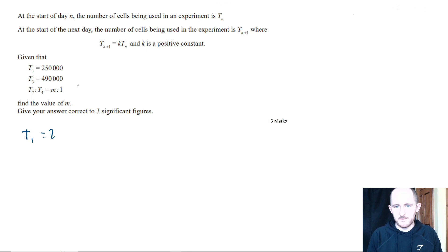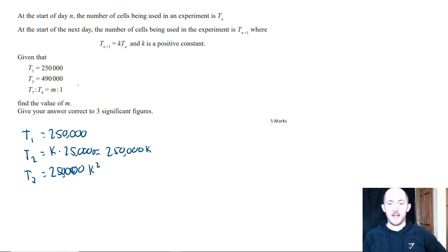We know that t_1 is 250,000, that's all well and good. Then I need to work out an equation for t_3. To do that, I need to actually go through t_2. So t_2 would just be k times 250,000, right? So 250,000k. And the value for t_3 is going to be 250,000 times another k, so 250,000k². All we've done is times by another k.